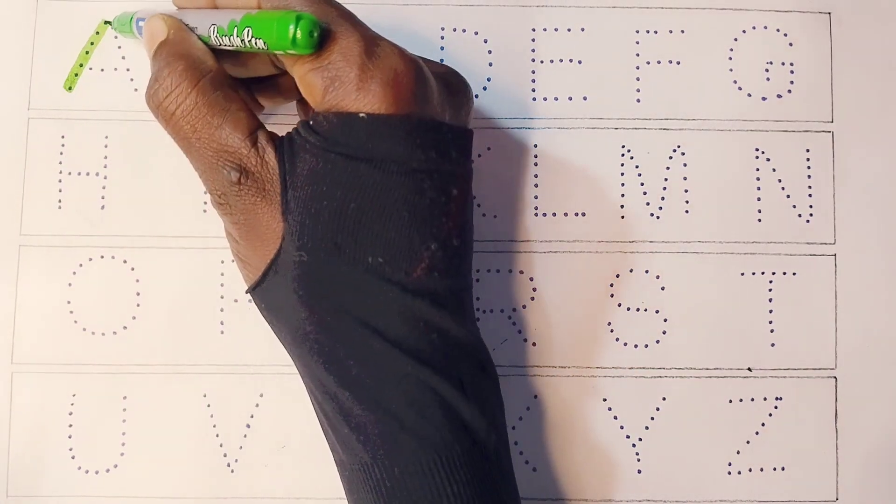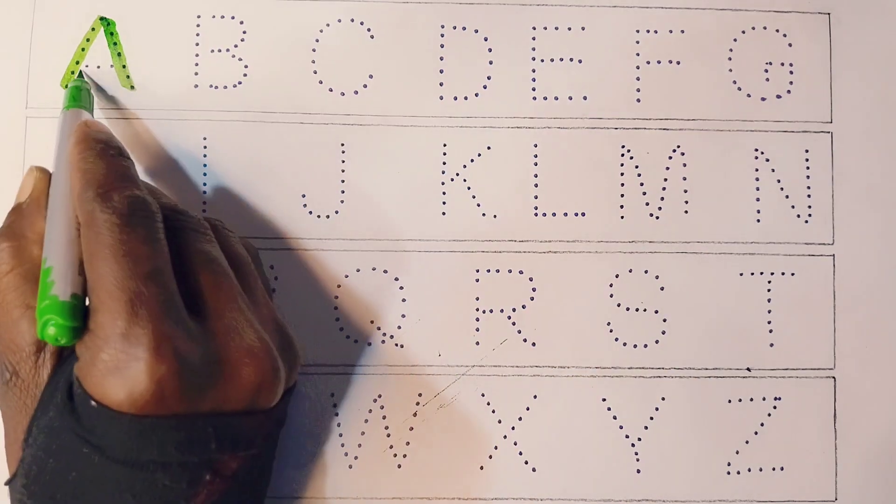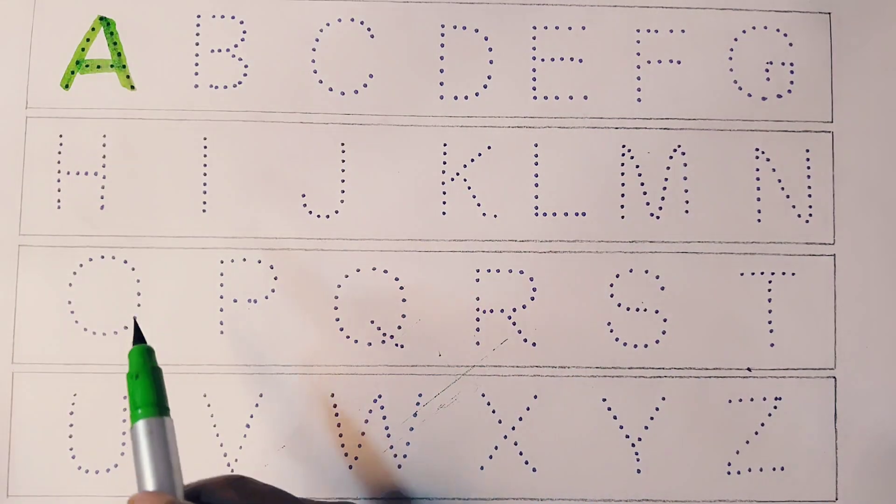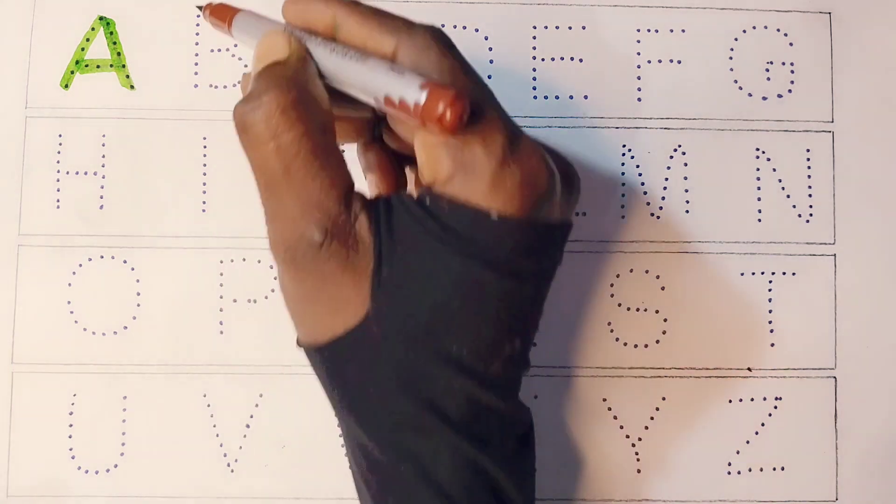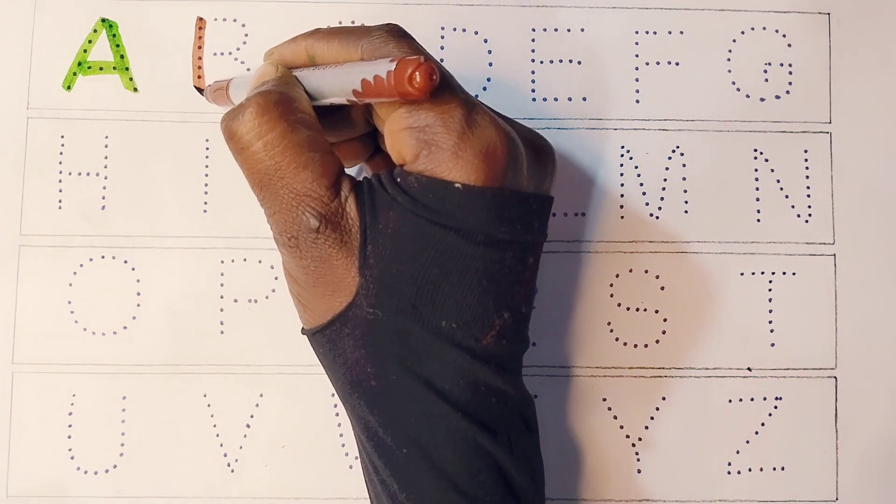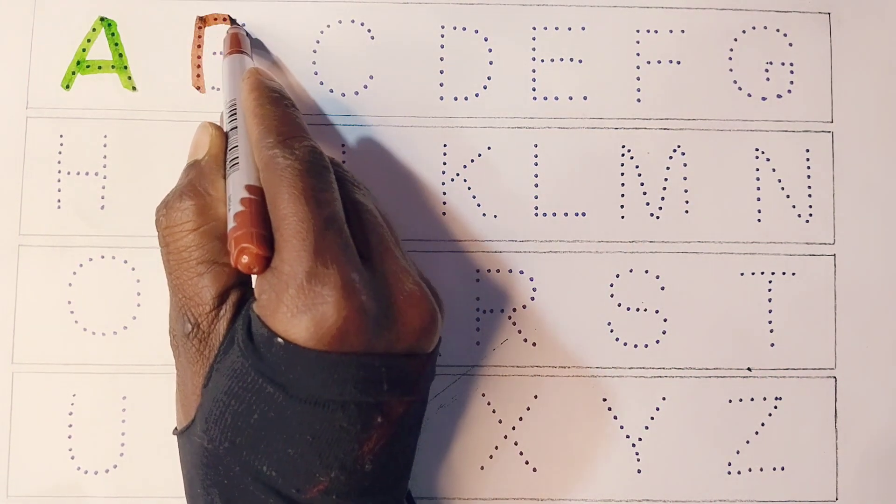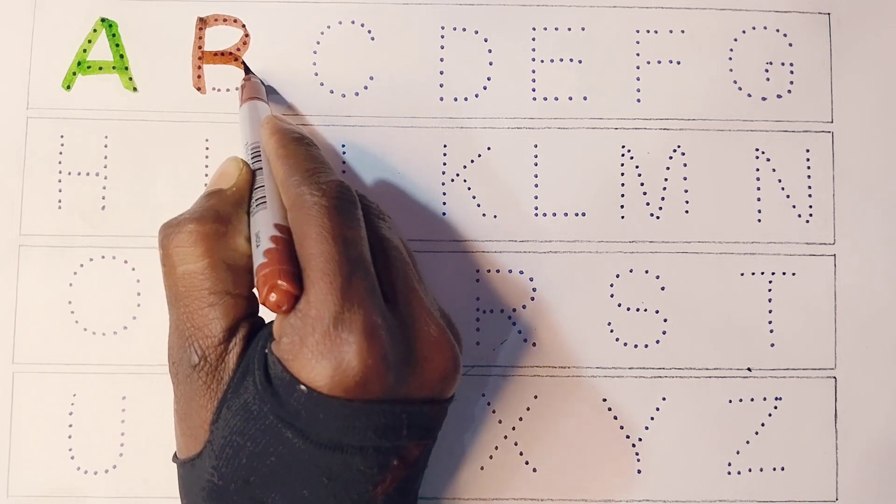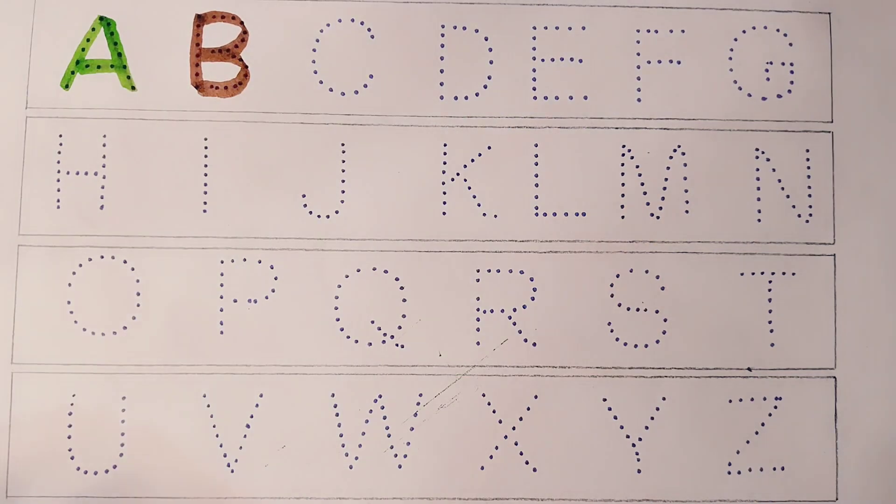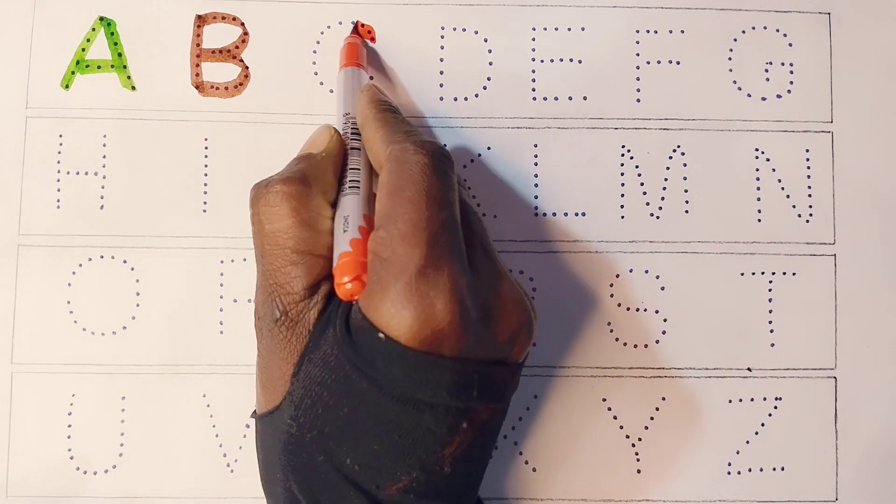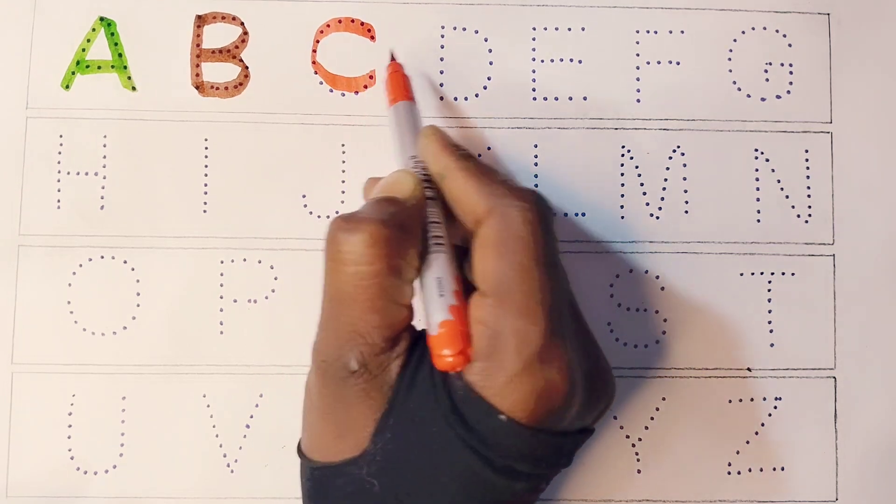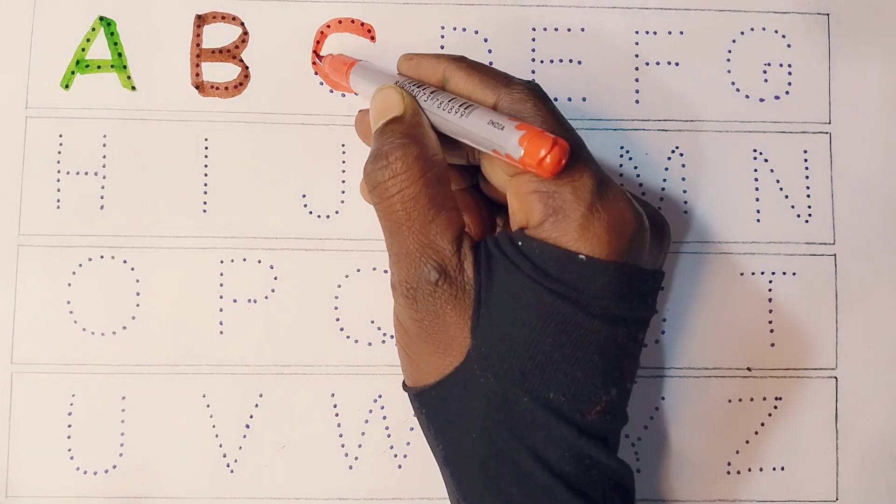A, A for apple, A for apple. B, B for boy, B for boy. C, C for cat, C for cat.